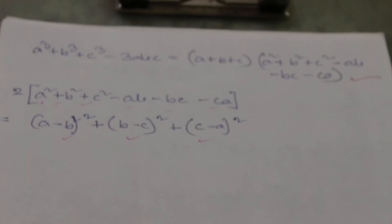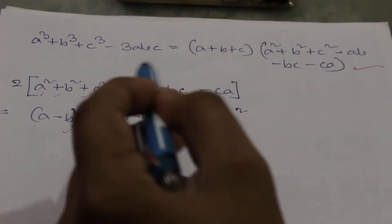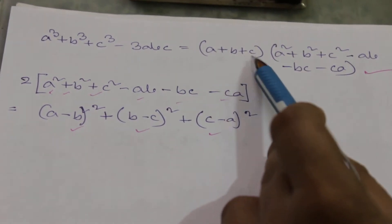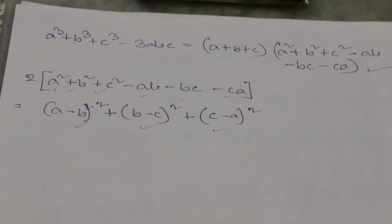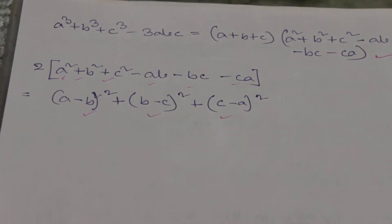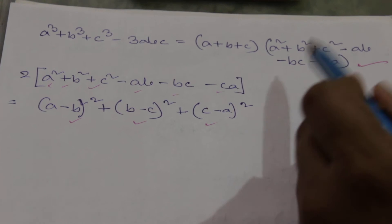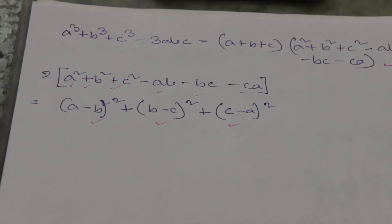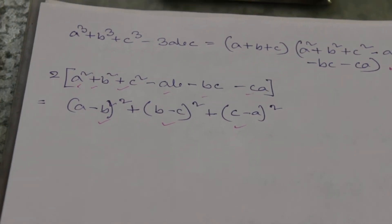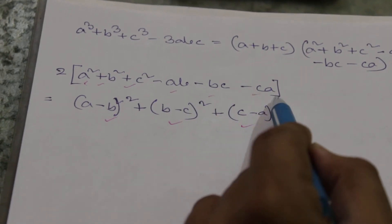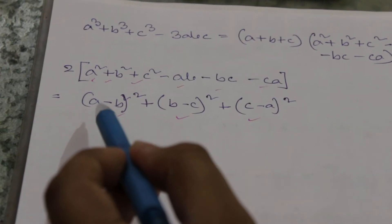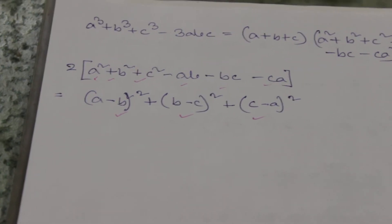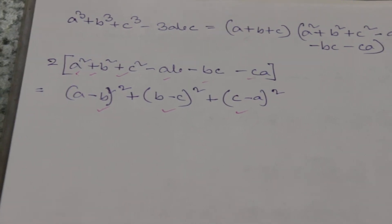Next is a cube plus b cube plus c cube minus 3abc. If we factorize this, we get (a + b + c) into (a square plus b square plus c square minus ab minus bc minus ca). And 2 into (a square plus b square plus c square minus ab minus bc minus ca) can be written as (a - b) whole square plus (b - c) whole square plus (c - a) whole square.